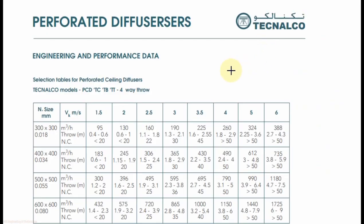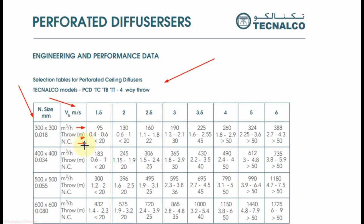This performance sheet is for selecting the 4-way type perforated ceiling diffuser. The first column shows the neck size in millimeters, and the top row shows the neck velocity in meters per second. The boxes in between show, for each size, the airflow in cubic meters per hour, throw in meters, and NC level. From any box you can select the airflow, throw, and NC level as per your requirement, then select the corresponding neck size of the perforated ceiling diffuser.